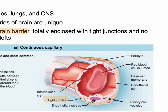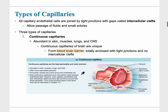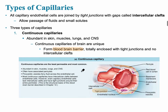The tight junction seals the endothelial cells so that nothing can get through — nothing can get from the blood vessel into the tissue that is surrounding it. They often have these associated cells called pericytes around them.